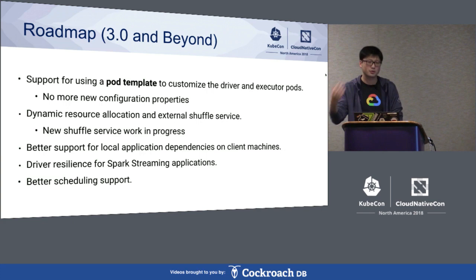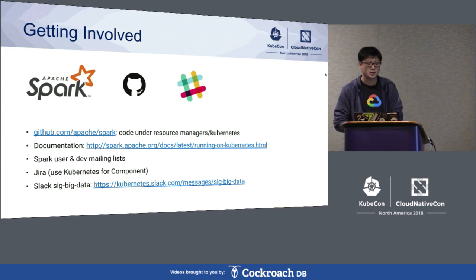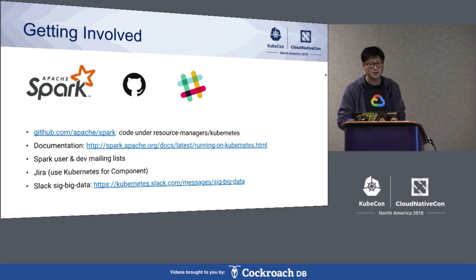If you want to get involved in this project, you can check out the code at the official Spark repo under resource-managers/kubernetes. There's documentation on the official Spark site, and since it's an Apache project, they prefer using user mailing lists for questions and general discussions. We also use Jira for feature requests and bug reports. There's also a Slack channel for SIG Big Data you can check out. With that, I'm handing back to Eric.